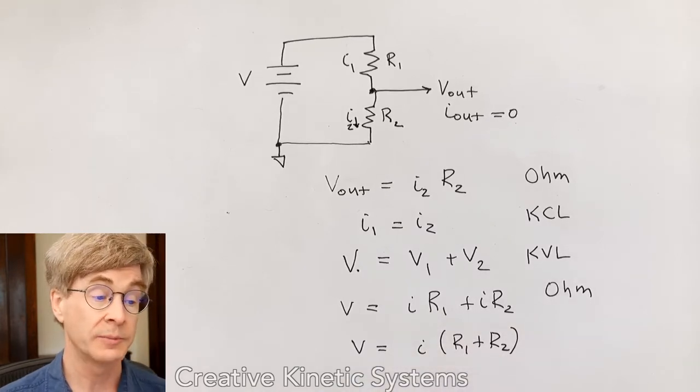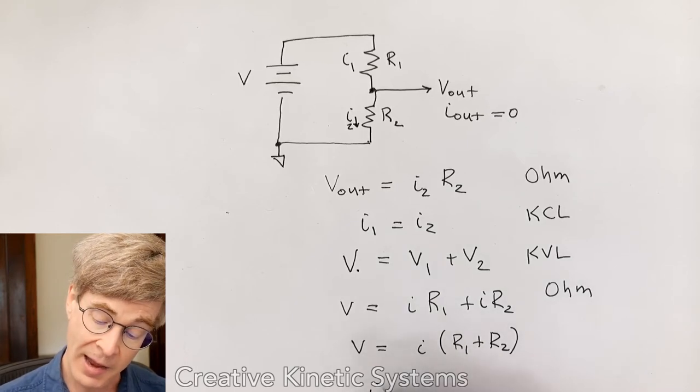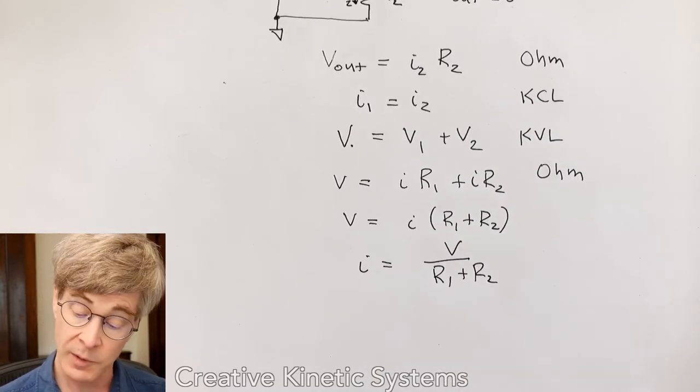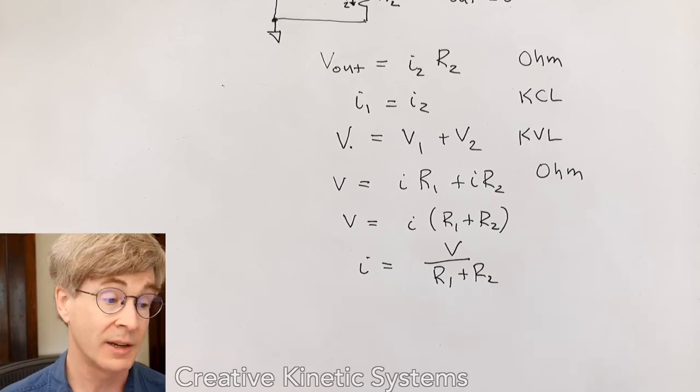And then continuing the algebra, I can get a value for I. I equals V divided by R1 plus R2. Bring that into view. And then again, that is algebraic rewriting. There's no special laws involved with that.